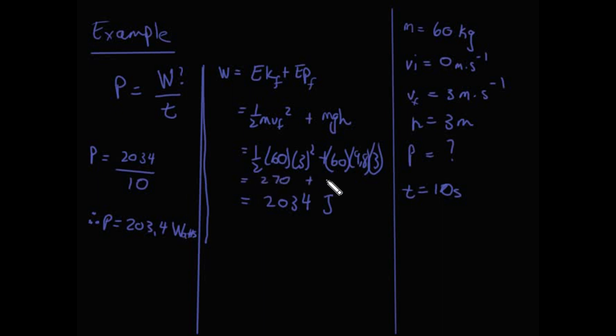The kinetic energy of the boy was only 270 joules, while his potential energy was 1,764 joules. This means he does 1,764 joules worth of work to get up the stairs, but also requires 270 joules to increase his kinetic energy up the 3-meter flight of stairs, which yields a power output of 203.4 watts.